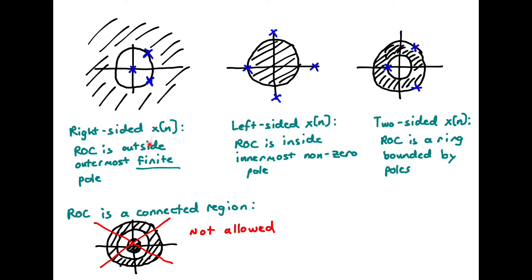For a right-sided sequence, the region of convergence is outside the outermost finite pole. For example, a signal with three poles — two on a circle and one at Z equals zero — has an ROC outside the radius of the outermost pole. This also reminds us that poles and zeros don't have to be on the real axis; they can be anywhere in the complex plane.